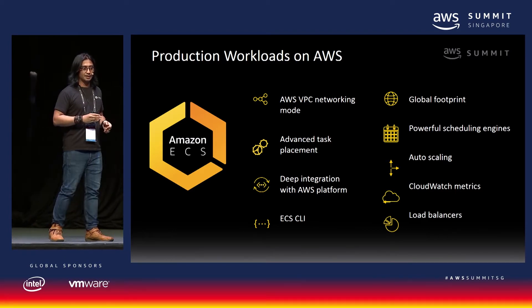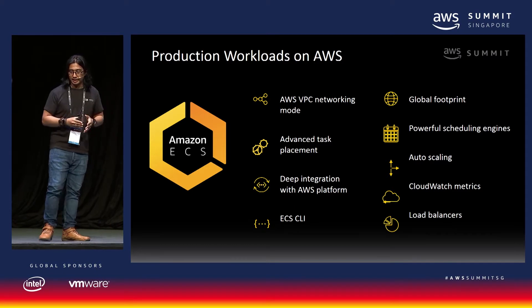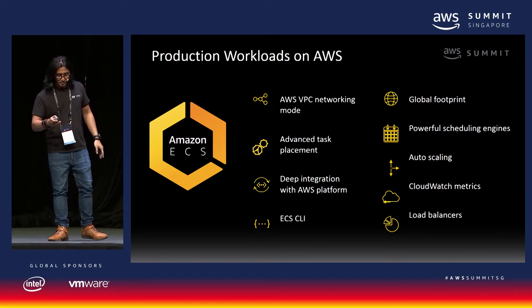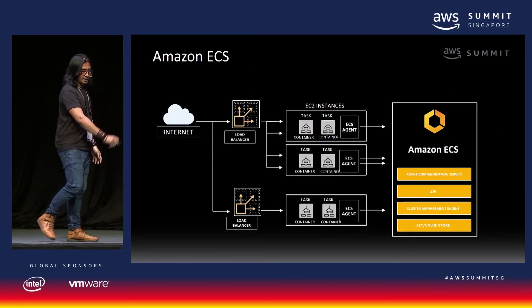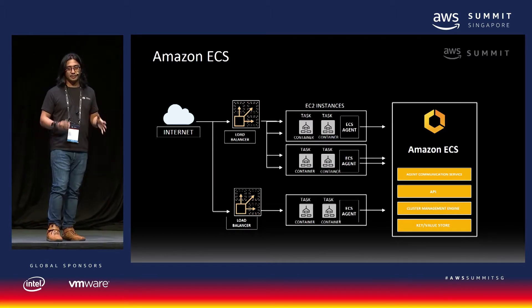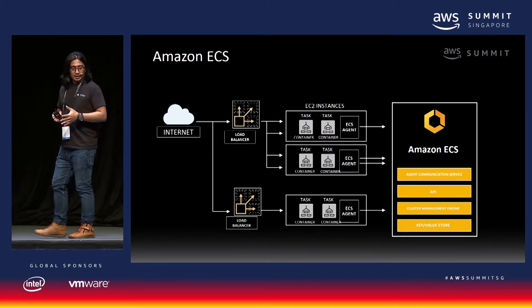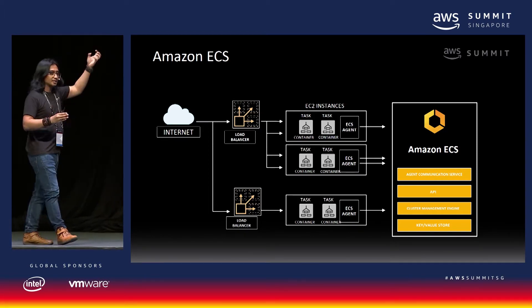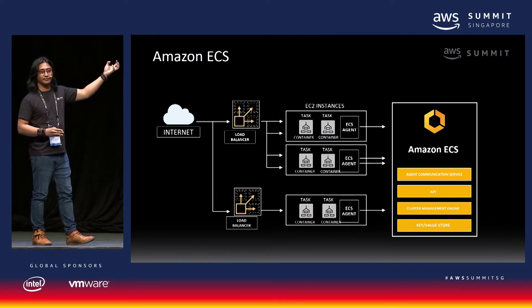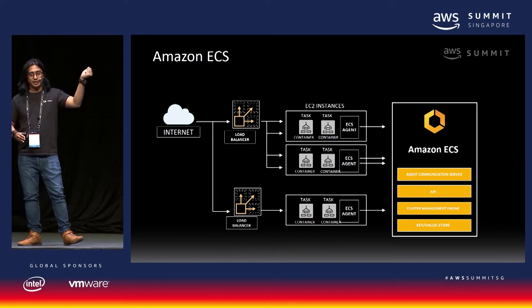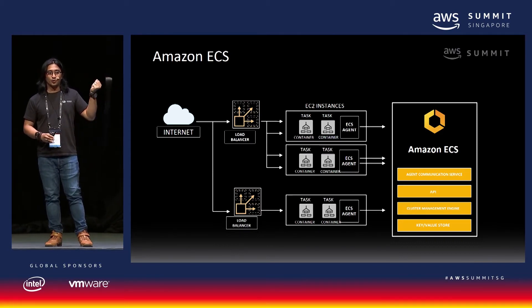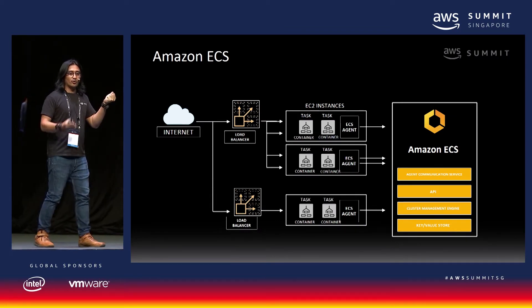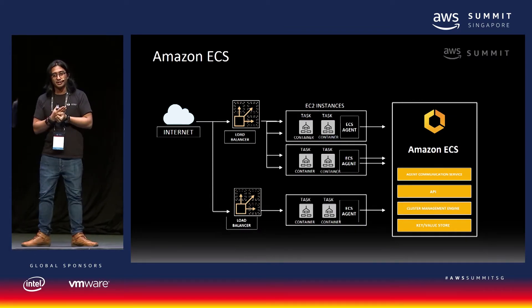With ECS and Auto Scaling, customers can run applications that grow to support cloud-scale workloads. ECS is built on a fleet of EC2 instances. This is a cluster you define yourself. Within the cluster, you build a fleet of EC2 instances on which you want your containers to run. These containers are what we call tasks and services in Amazon ECS.